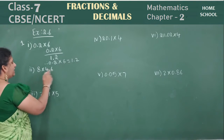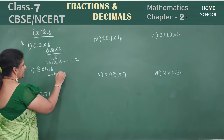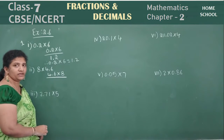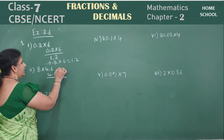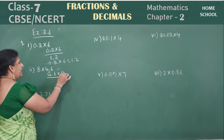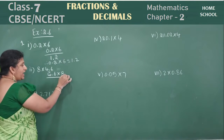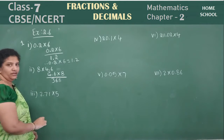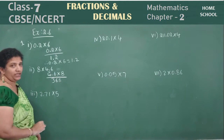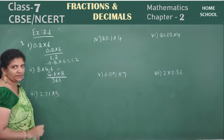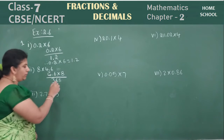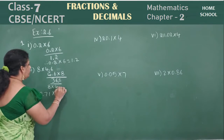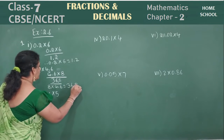Let's see the next one. 4.6 into 8. Look carefully. 8 sixes are 48 — write 4, carry 4. 8 fours are 32, plus 4 will be 36. Now where do you keep the decimal point? After 1 decimal value in the question, put the point after 1 value in the answer. That is 36.8. So, 8 into 4.6 is equal to 36.8 is your answer.